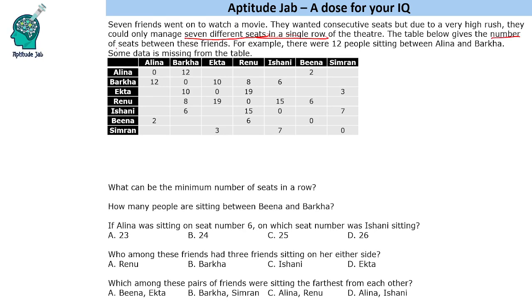Now how to read this table: the number 12 is written between Alina and Barkha, so this means there were 12 people between Alina and Barkha. Similarly, if we read 15 between Ishani and Renu, likewise we have to read this information and make the arrangement of these people.